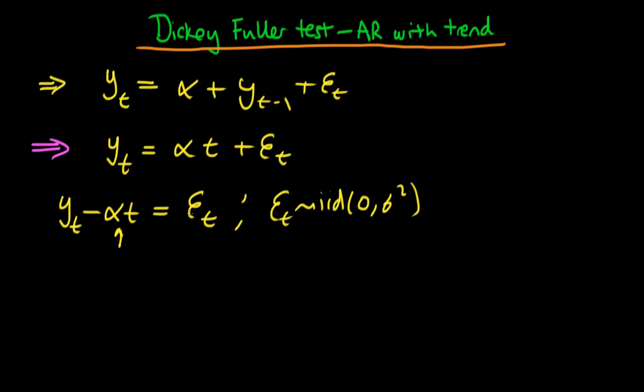So how do we go about testing for whether we have a random walk with drift or we have a deterministic time trend?